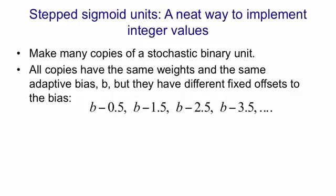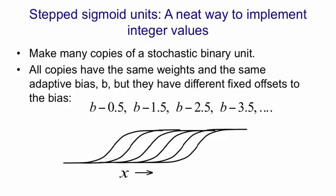If you have a whole family of sigmoid units like that, with the bias changed by one between neighbouring members of the family, the response curve looks like this. If the total input x is very low, none of them are turned on. As x increases, the number that get turned on increases linearly.